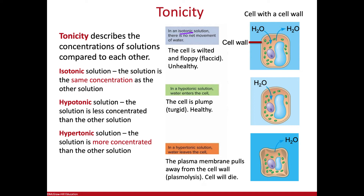In a hypotonic solution, which means lower concentration of solutes outside, the water is going to move towards the higher concentration on the inside compared to the outside, which means the water is going to plump up the cell. In a cell without a cell wall it would burst, but since the cell wall is rigid, it holds that water pressure in and doesn't allow it to burst — it's just plump and healthy. We call that turgid, which means plump.